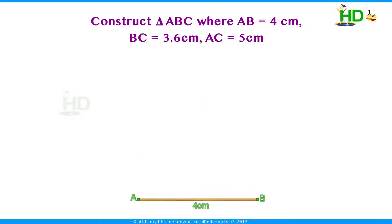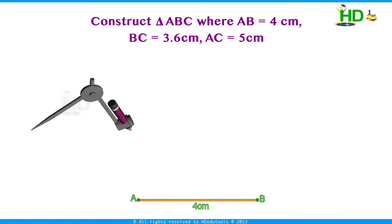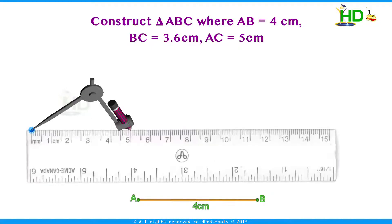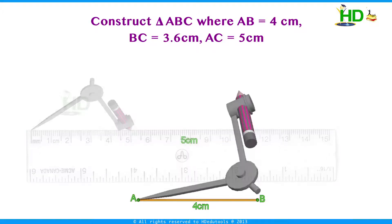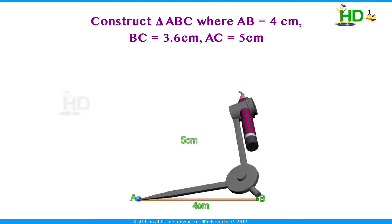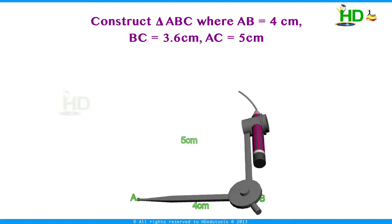For this, draw a line segment of length AB = 4 cm. With center A, draw an arc of radius 5 cm. To draw an arc, fix the pencil in the compass, place the metal pointer at 0 cm of the scale and stretch until the pencil pointer touches 5 cm — now this is the radius 5 cm. With this radius and center A, draw the arc.